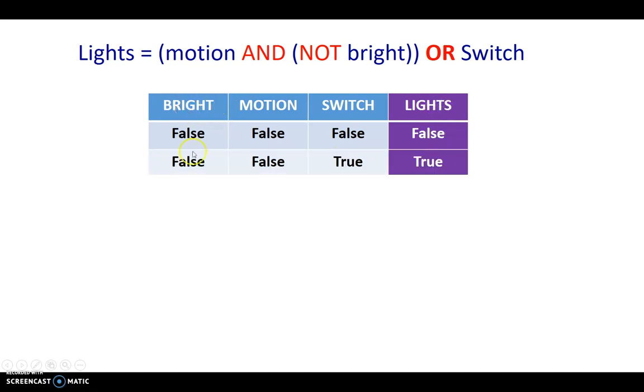Now, it's not bright outside, meaning it's dark outside, and there's no motion, so there's no need to turn on the light. But, this manual switch is turned on, so in this case, because of this expression, switch is true, our light's expression comes out to be true.